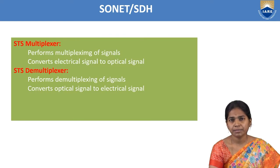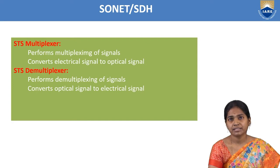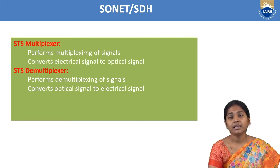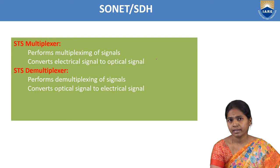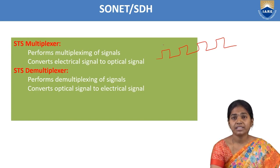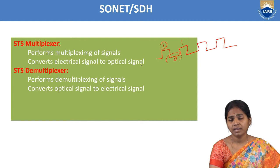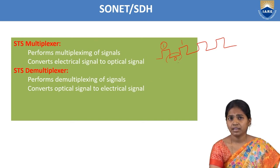The STS multiplexer performs multiplexing of signals and converts the electrical signal to optical signal. In optical communication, optical sources are LED and laser. With LED and laser, the electric signal is converted into light using on-off pulses. If LED is on, it represents 1; if light is off, we represent 0; if light is present, we represent 1. So electrical signal is converted into light form.